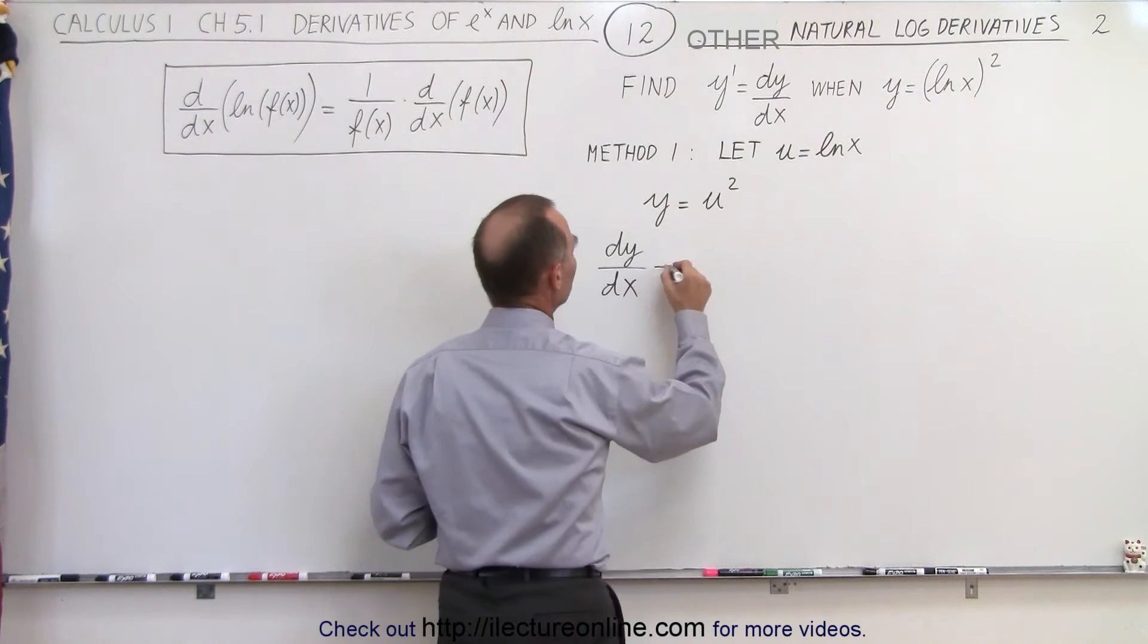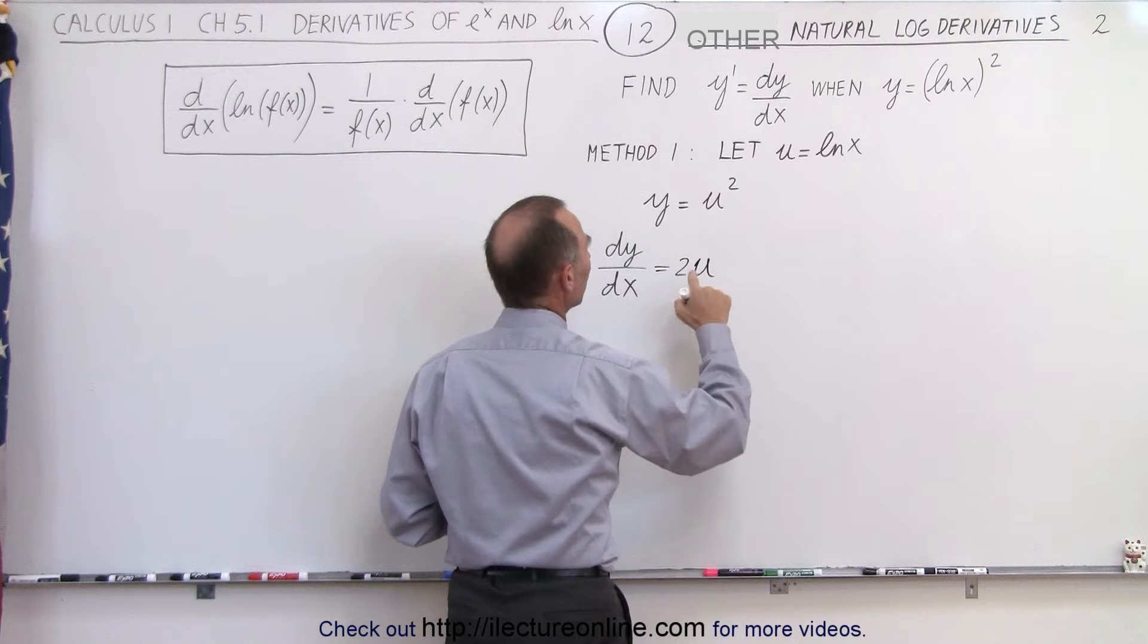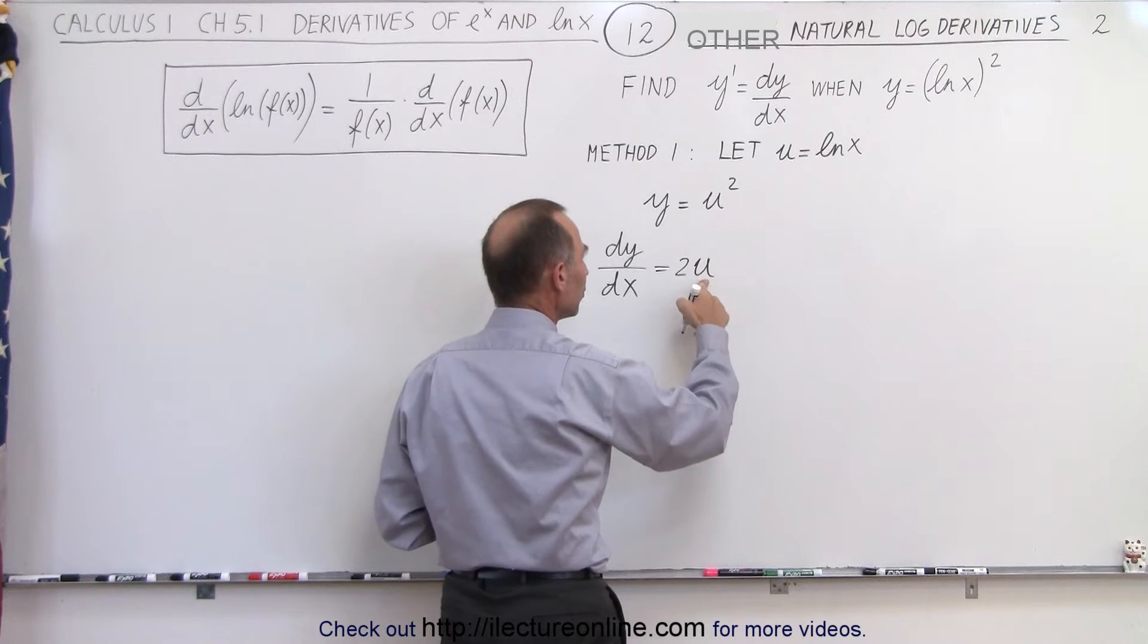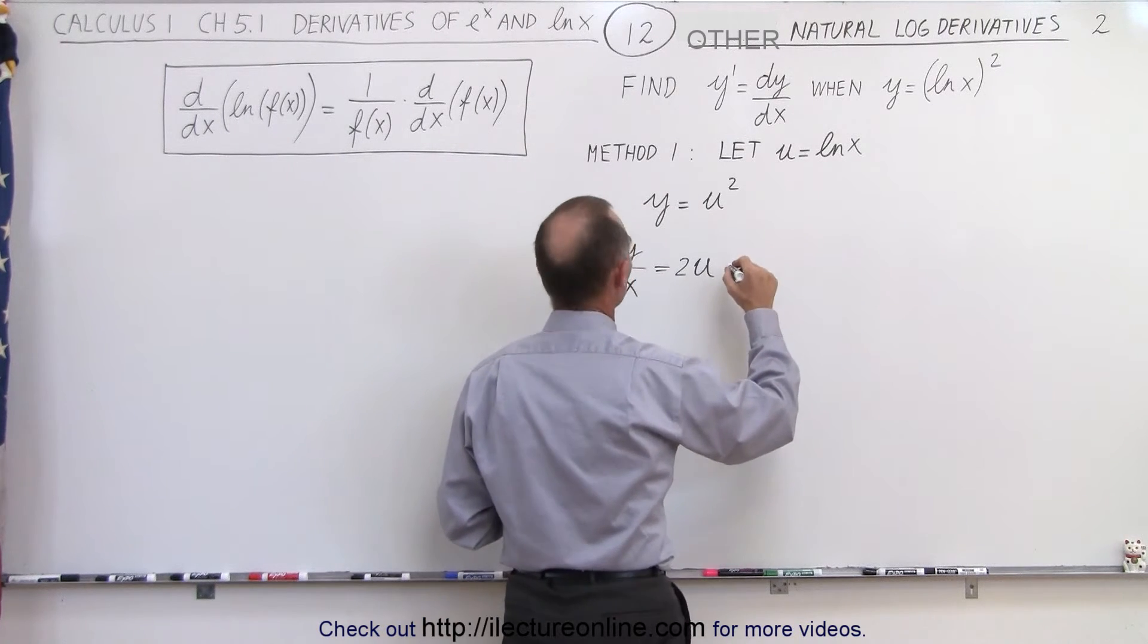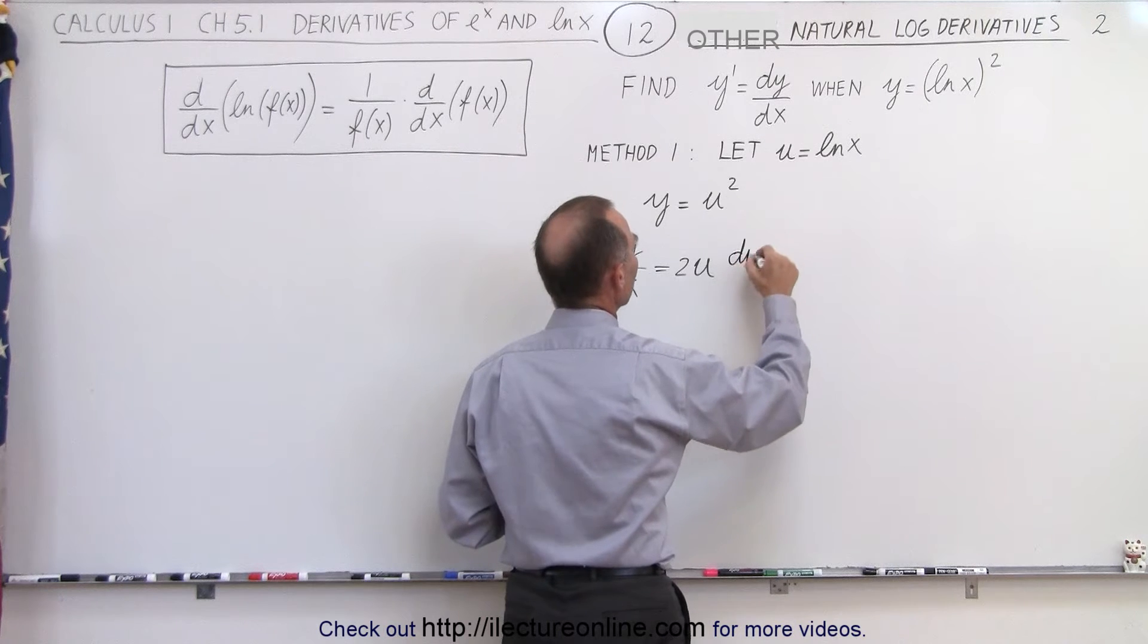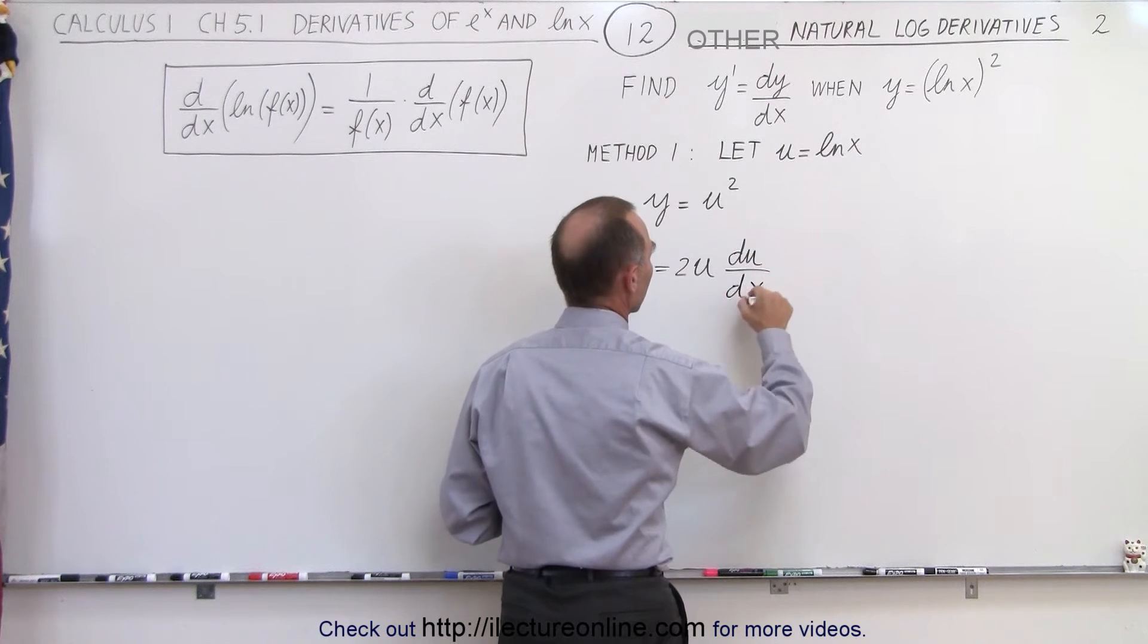So this is going to be equal to 2u, but now we also have to multiply that times the derivative of u with respect to x, which is times du dx, like this.